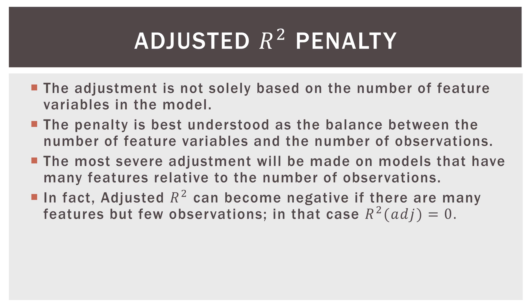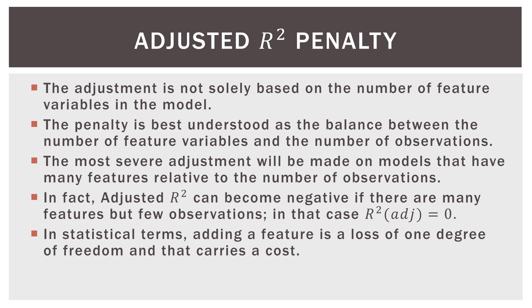If adjusted R-square is negative, we just set it equal to zero. In statistical terms, adding a feature is a loss of one degree of freedom, and that loss carries a cost.